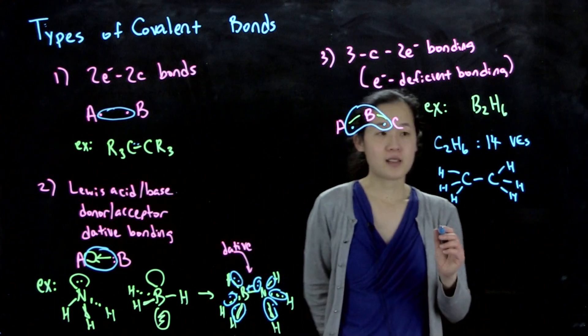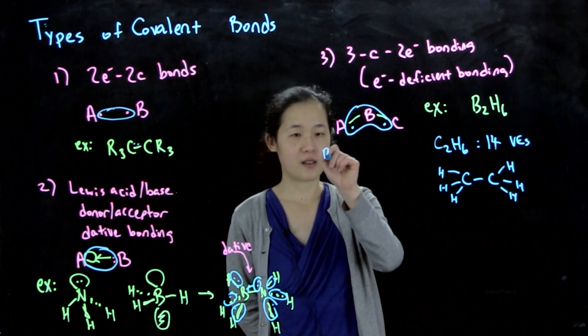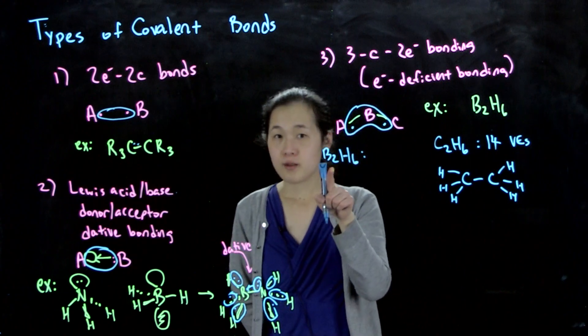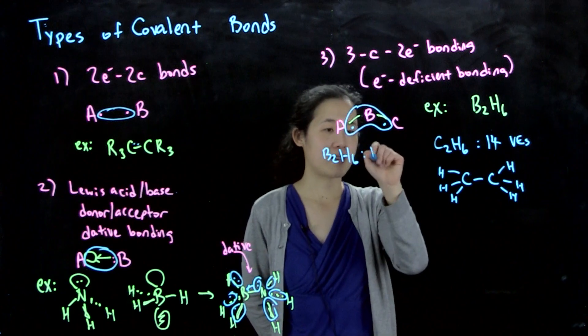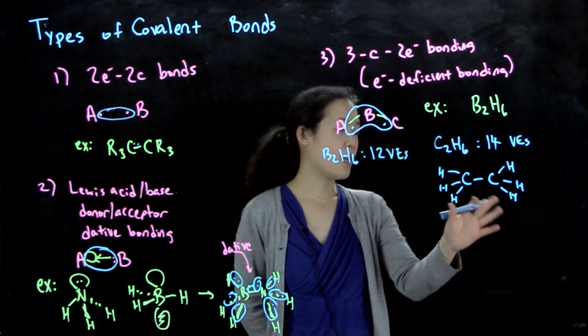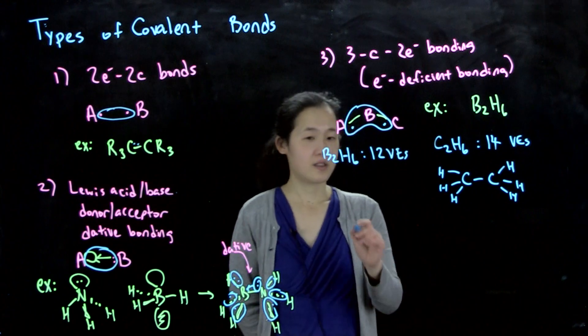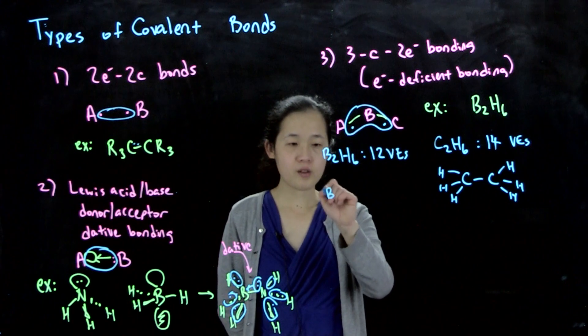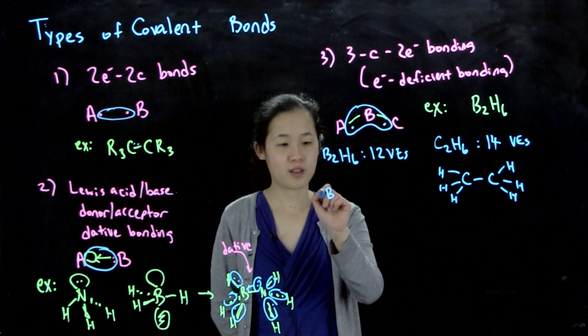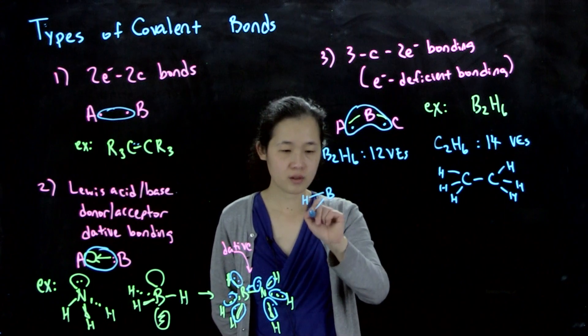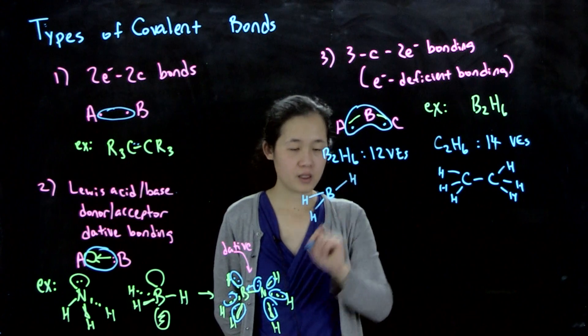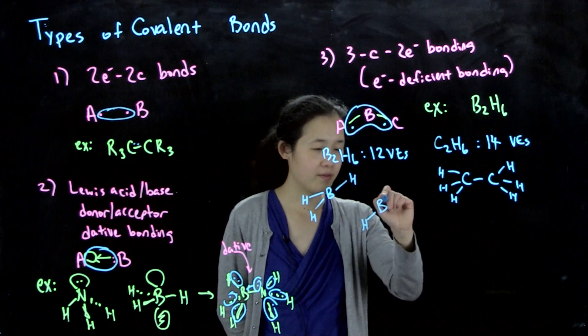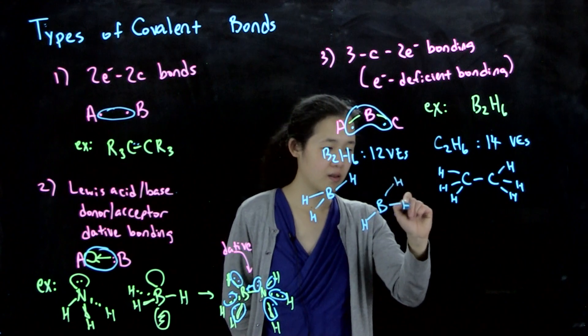In contrast, if we did our B2H6, we only have 3 times 2 plus 6 is 12 valence electrons. So there's no way to accommodate that. What I'm going to do is first draw out two separate borane molecules, BH3, and then our second borane.